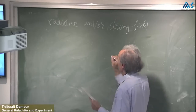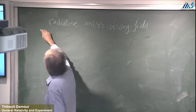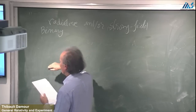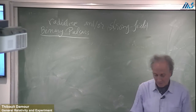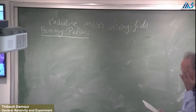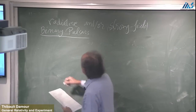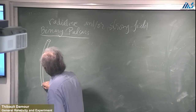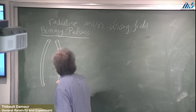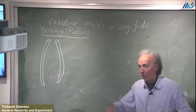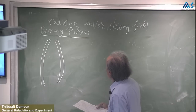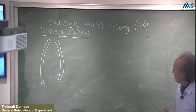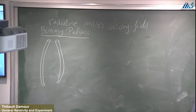I want to talk about existing tests, which have been obtained thanks to the discovery in the summer of 1974 by Joe Taylor and Russell Hulse of binary pulsars, which earned them the Nobel Prize. This is a situation where you have two neutron stars going around in orbits. At lowest approximation, the orbits look like elliptic motions. This is a nice example of how to derive gauge-invariant, diffeomorphism-invariant observables in GR.